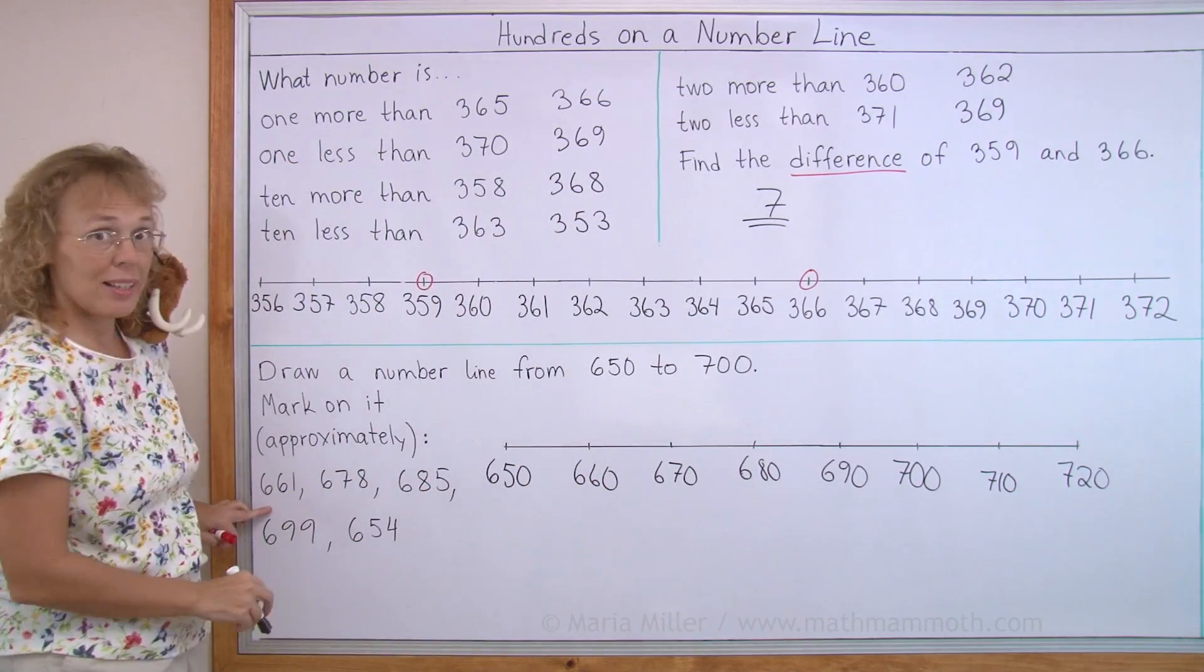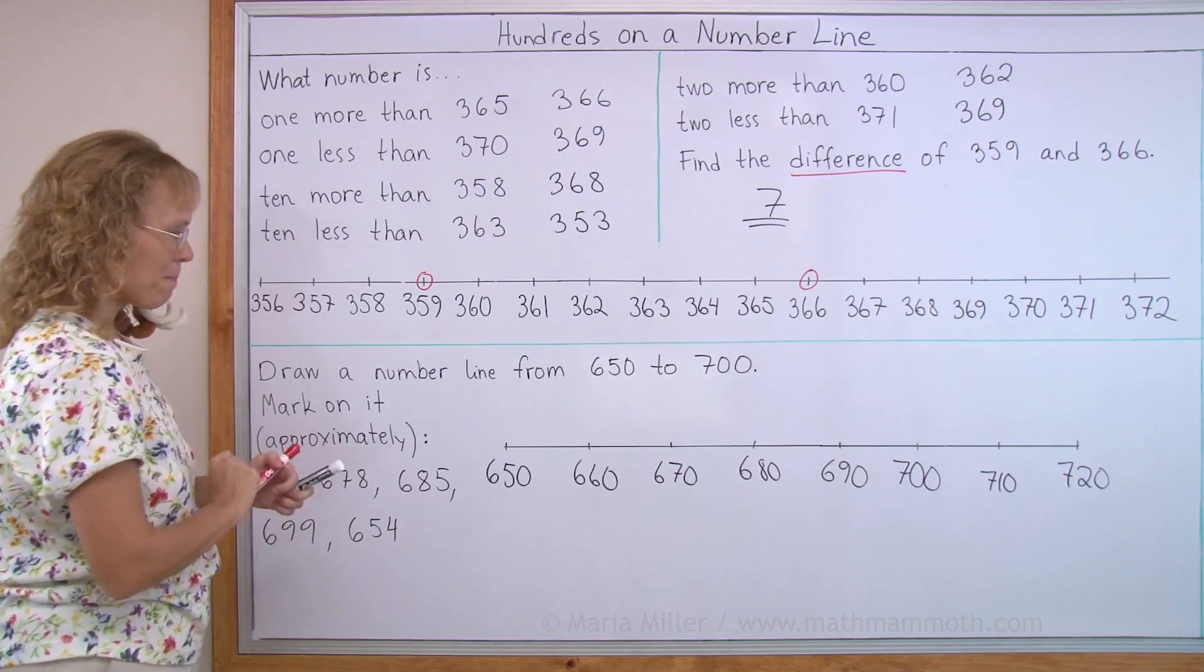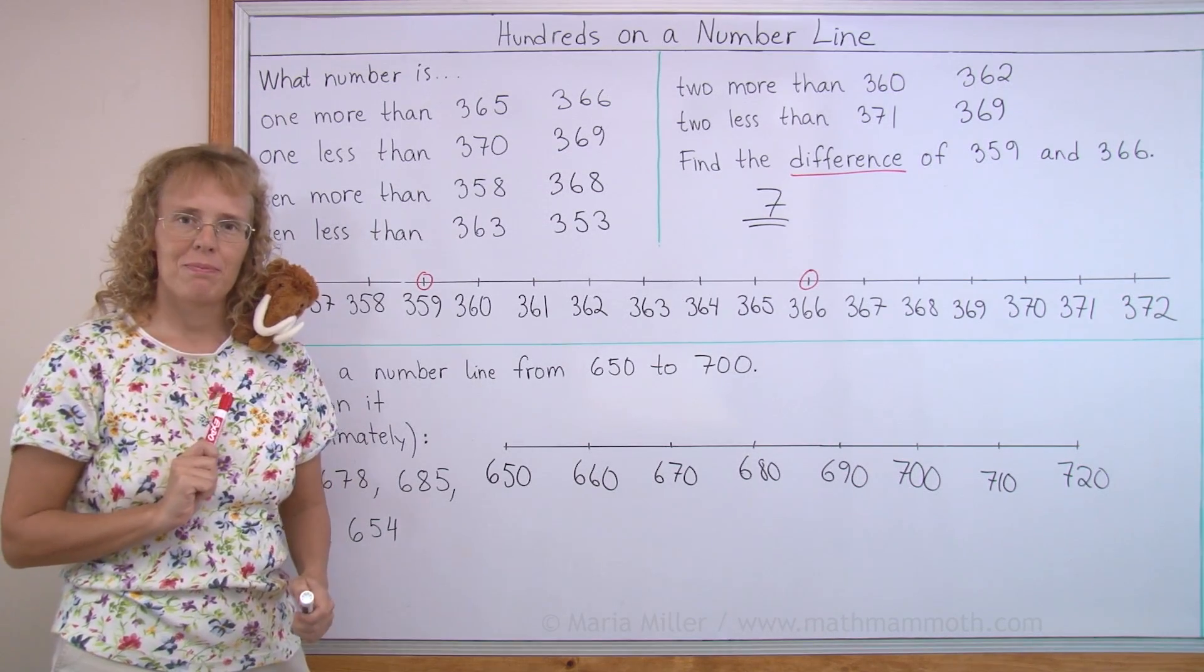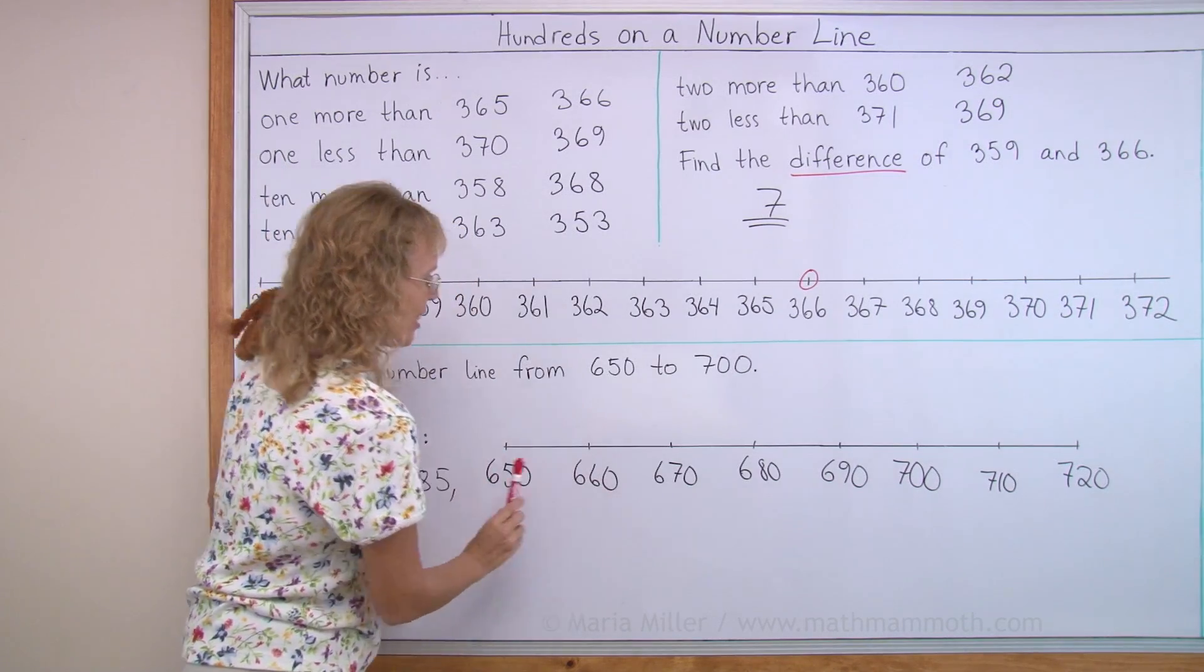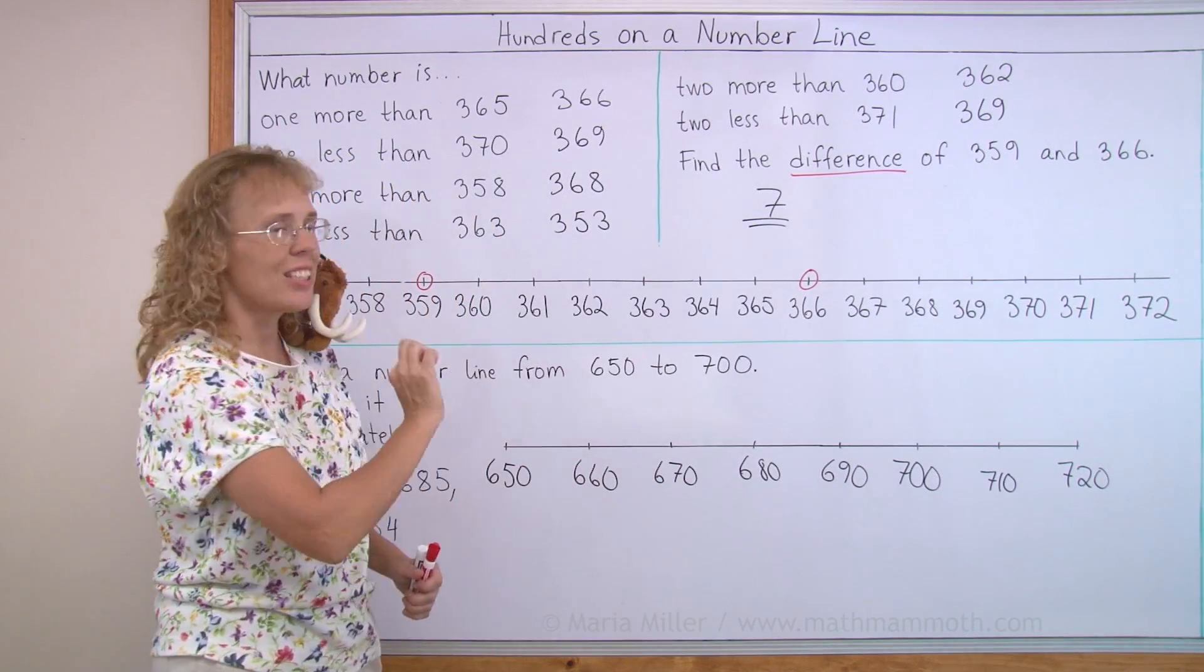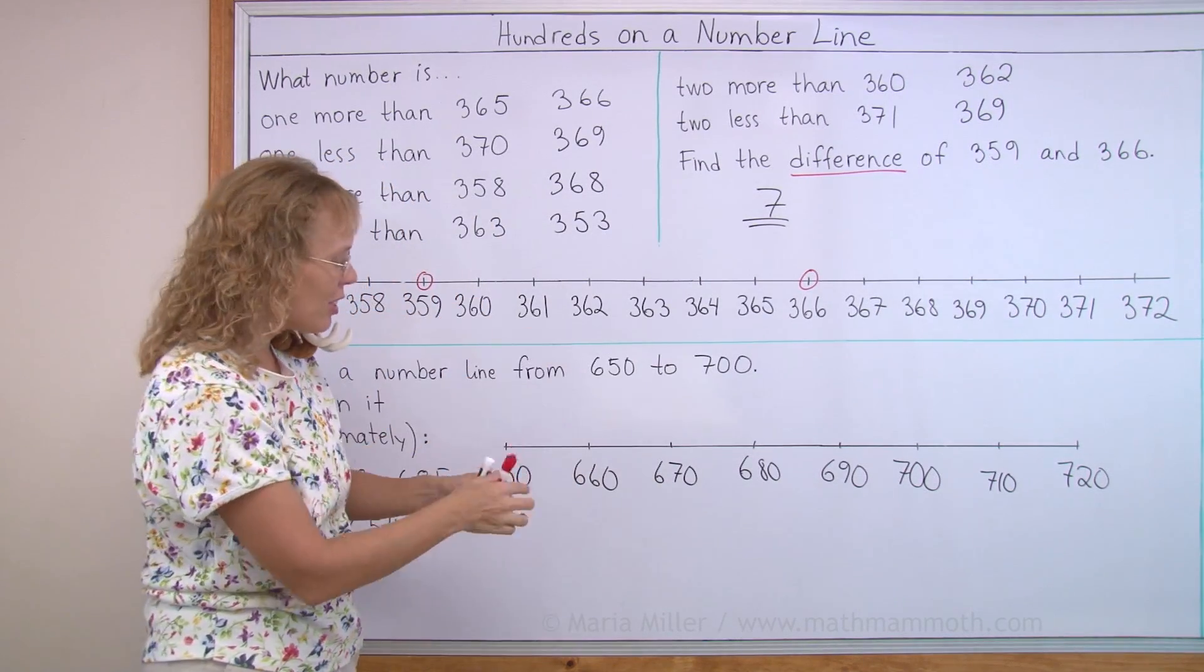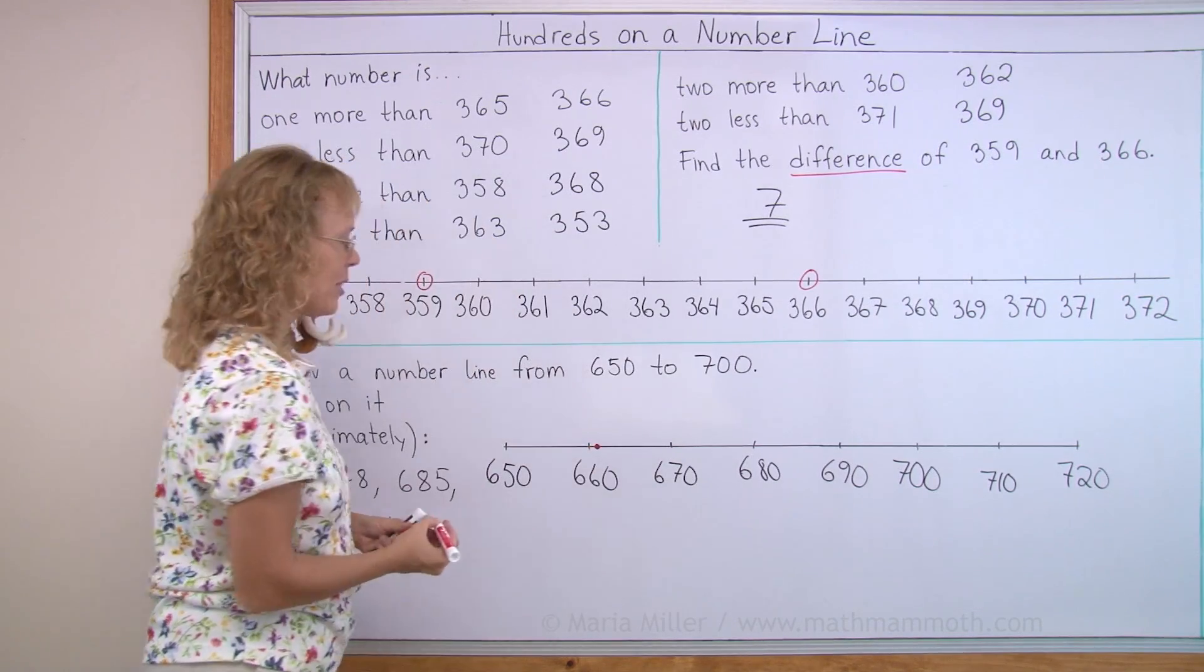And then mark these numbers here, 661, where would it go? Can you tell? Approximately. Look here's 660. And then of course here would be those numbers 661, 662, and so on. So 661 would be somewhere there, right?